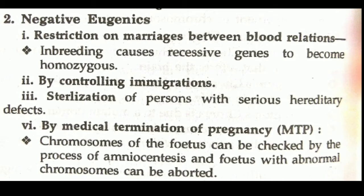Now we talk about negative eugenics, which is not about the development of human race but rather has a detrimental effect on it. Number one is the restriction on marriages between blood relations. Inbreeding causes recessive genes to become homozygous.